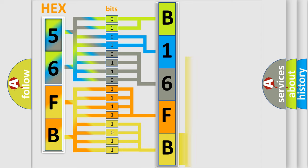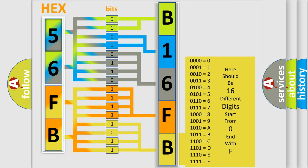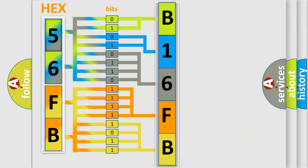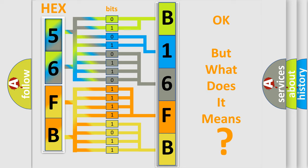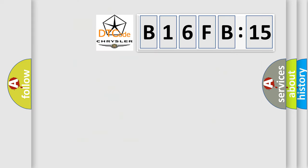So, what does the diagnostic trouble code B16FB15 interpret specifically for Chrysler car manufacturers? The basic definition is: engine oil pressure low. And now this is a short description of this DTC code.